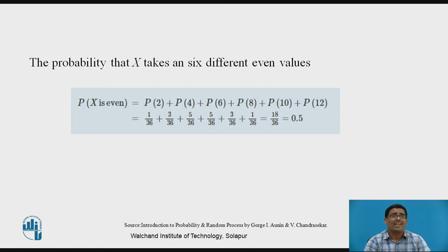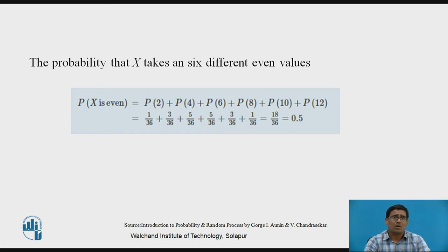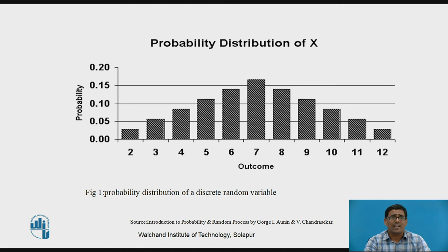For part three, the probability that X takes an even value: the even values from our sample are 2, 4, 6, 8, 10, and 12. Using the table: P(2)=1/36, P(4)=3/36, P(6)=5/36, P(8)=5/36, P(10)=3/36, P(12)=1/36. Summing these gives 0.5, which satisfies the property of being less than one.